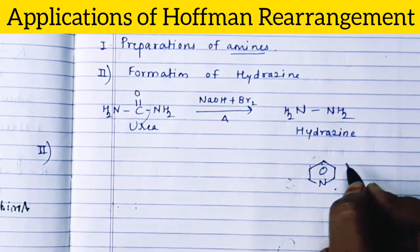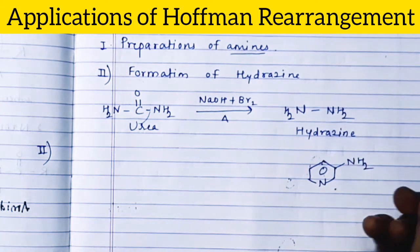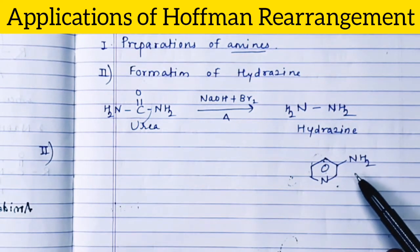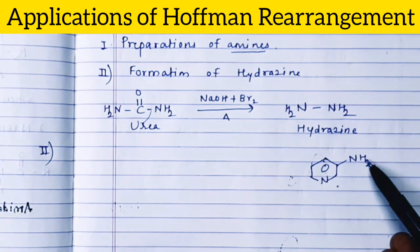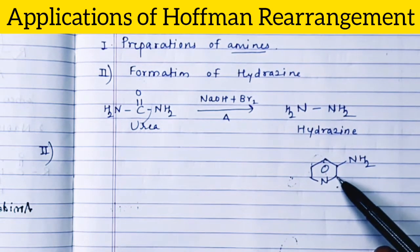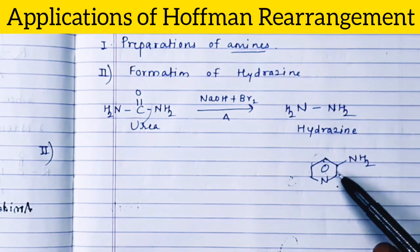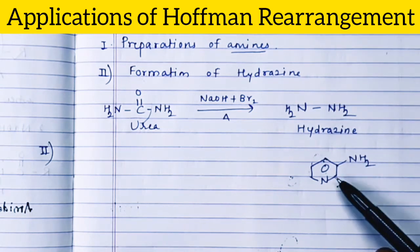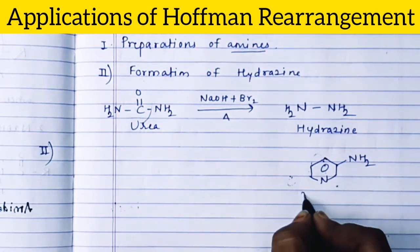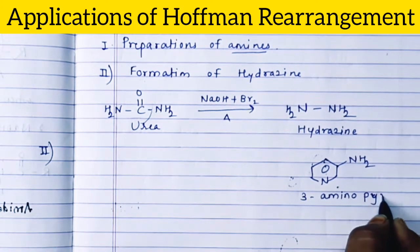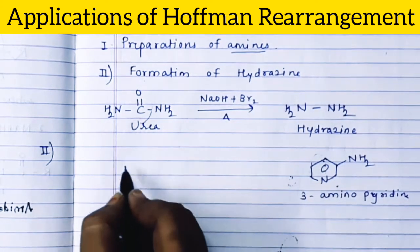Beta-aminopyridine means NH2 is at the third position. Pyridine is a heterocyclic compound, and whenever it undergoes nucleophilic substitution reaction — if we want to substitute the hydrogen of pyridine by NH2 — the reaction always occurs at the second position. So it is impossible to get 3-aminopyridine by direct substitution; we will always get 2-aminopyridine.